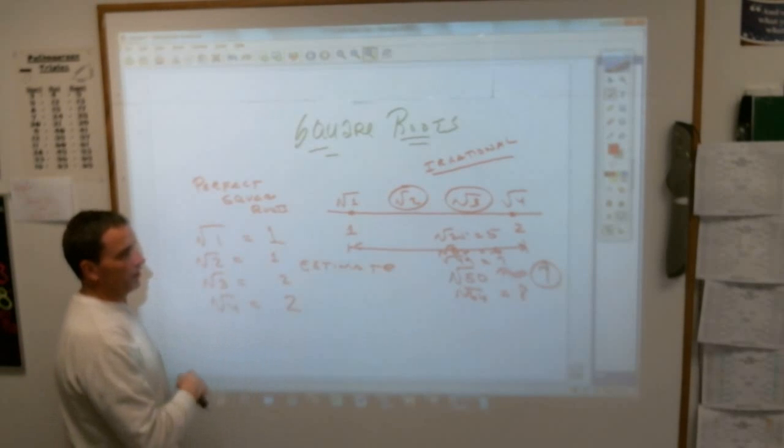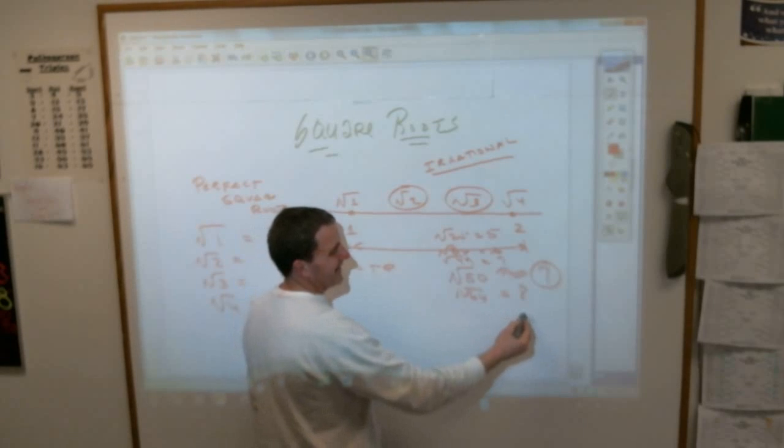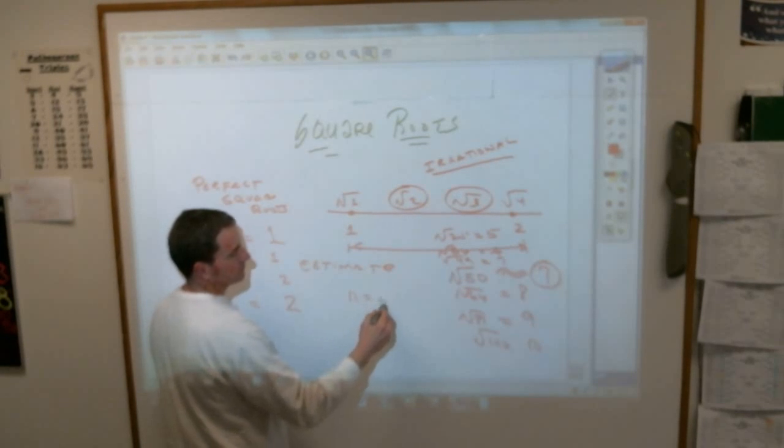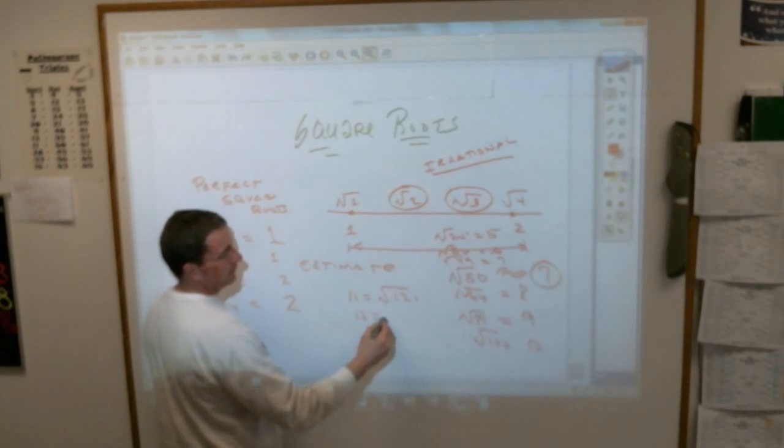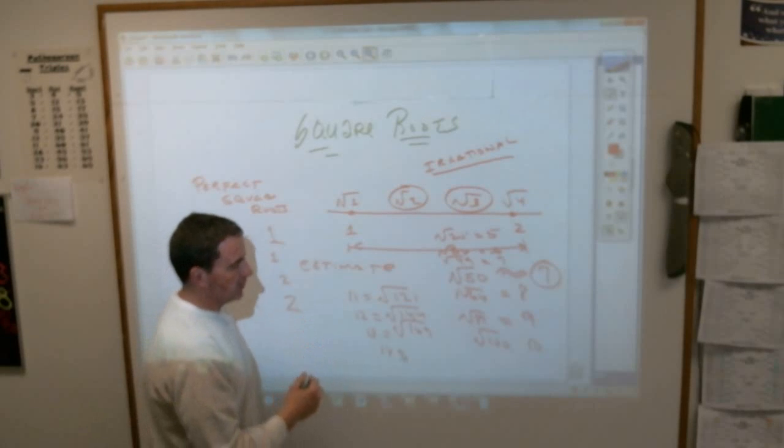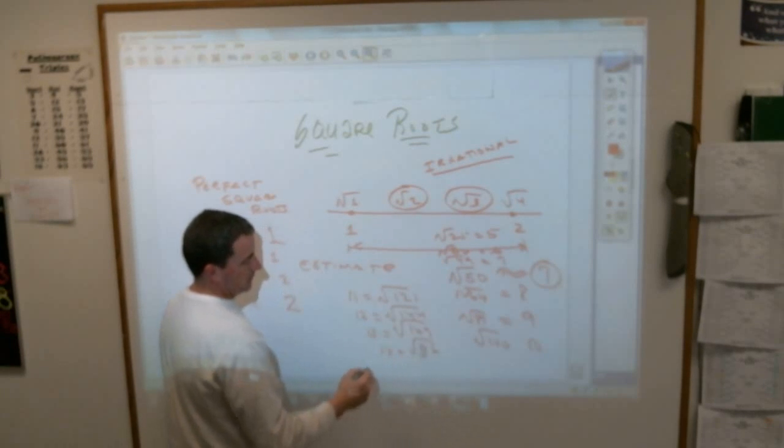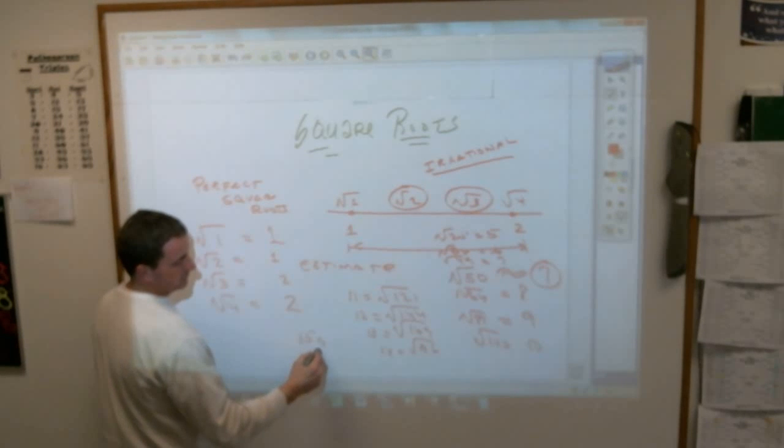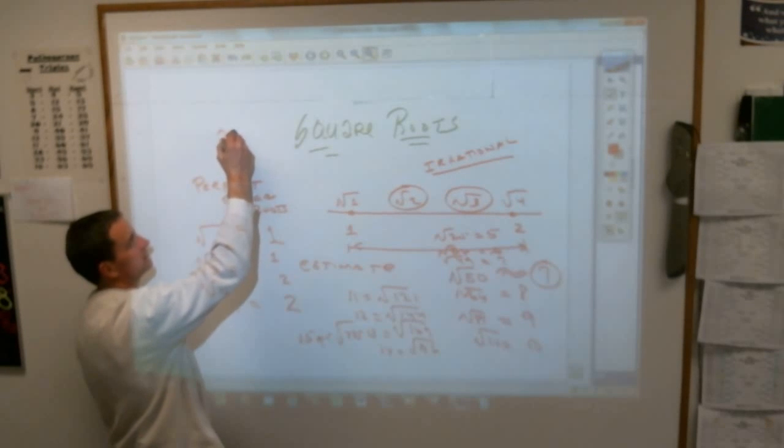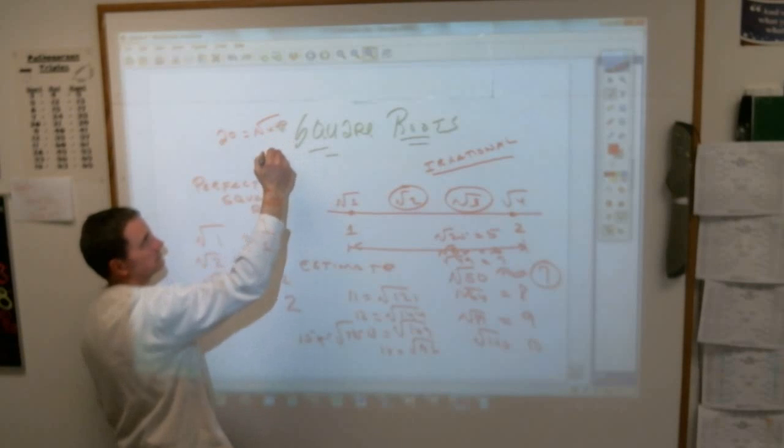So I suppose you should probably know all the perfect squares. You know, the square root of 9 is the square root of 81. 10 is 100. How about 11? Everybody? 121. 12 is? 144. 13? 169. 14? 14 times 14, what is it? It's 196. 15? 225, I think. 20 is the square root of 400. 30 is the square root of 900.